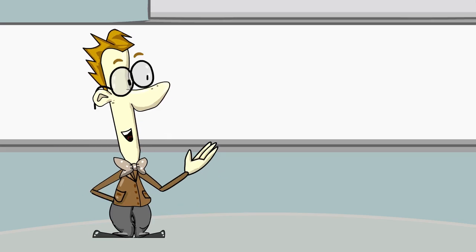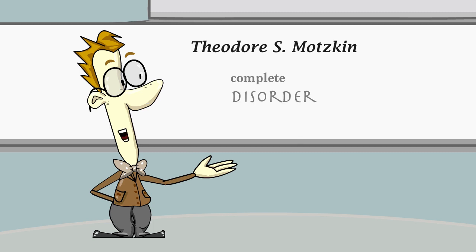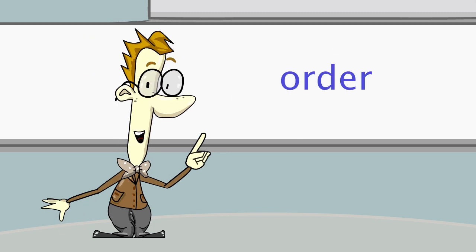Well, here's the description of Ramsey theory by Theodore S. Moskin. Complete disorder is impossible. How to prove the existence of order in chaos?